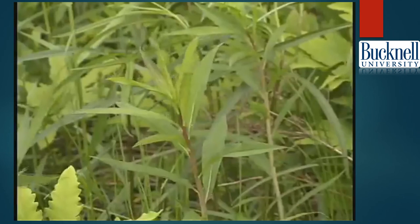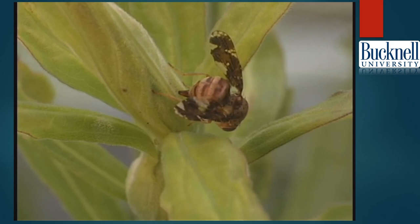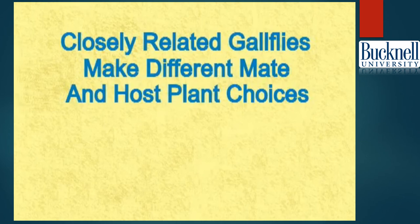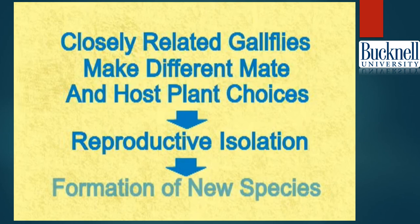Because late goldenrod gall flies evolved from tall goldenrod gall flies, and since at least partial reproductive isolation is evident, these two groups may be on their way to forming two separate species. The tall goldenrod gall flies and late goldenrod gall flies are very closely related, yet each mates on and deposits eggs in its own host plant in preference to the other goldenrod species, and reproduces more successfully by doing so. For herbivores such as gall flies, one of the most common modes of speciation may be through host shifts that result in some reproductive isolation.